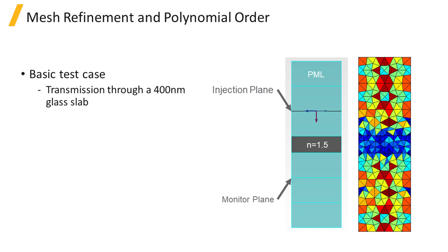As we just mentioned, the accuracy of the DGTD calculation can be controlled via both the mesh and the polynomial order. To demonstrate this in more detail, we have run a basic test case.